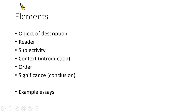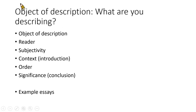Let's look at the first element: the object of description. What are you describing? What is the subject of your description essay? More obviously, you can choose a physical object — you can describe what it looks like, what it does, what it means to you, how you acquired or encountered it, what you do with it, how it has changed your life. But you can also describe more abstract things: a memory, a person, a moment in time, an idea, a process.